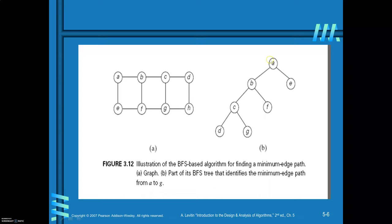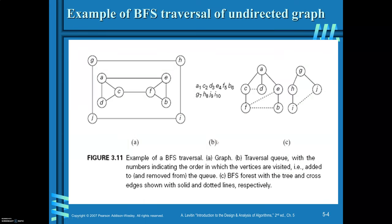For this graph, BFS traversal is applied. Start with U. The adjacent vertices of U are B and E. For B, it is C and F. For C, it is D and J. And for D, it is H. Now here, for this BFS traversal, you are getting two trees. This indicates both trees are disjoint trees. A set of disjoint trees is called a forest. When you apply BFS traversal to a graph and you get a forest, this indicates the graph is a disconnected graph — it is not connected. So when you apply BFS traversal and you get a cross edge, then the graph contains a cycle.